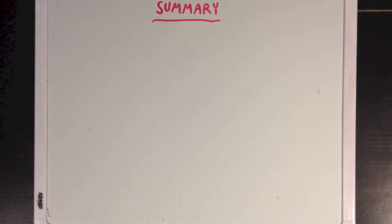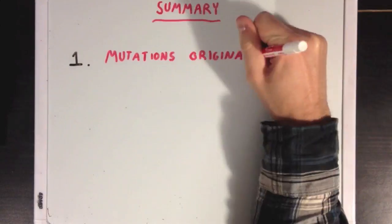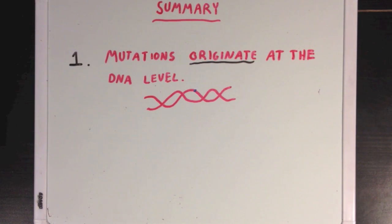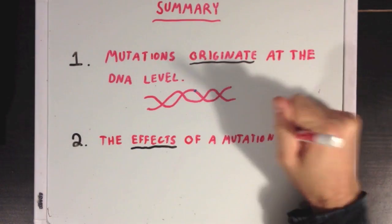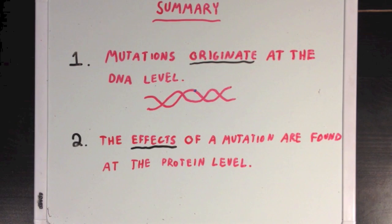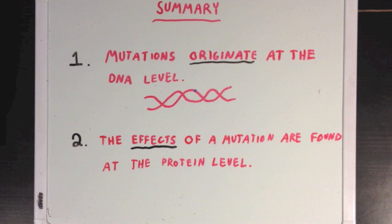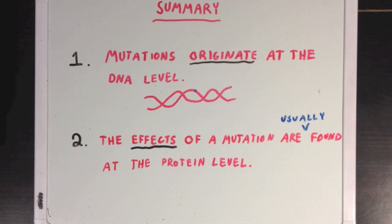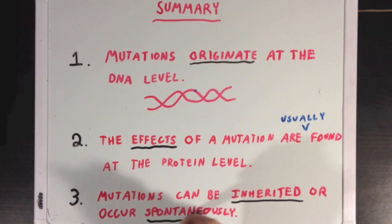So what did we learn? First, we learned that mutations originate at the DNA level, and not at the RNA or protein level. But the effects of a mutation, like the example we gave with sickle cell disease, are found with problems with the proteins that are ultimately expressed by the mutated DNA. Like every rule, there are a couple of exceptions, but we can say that the effects of a mutation are usually found at the protein level. Finally, we learned that mutations are either inherited from a parent, or come on entirely spontaneously.